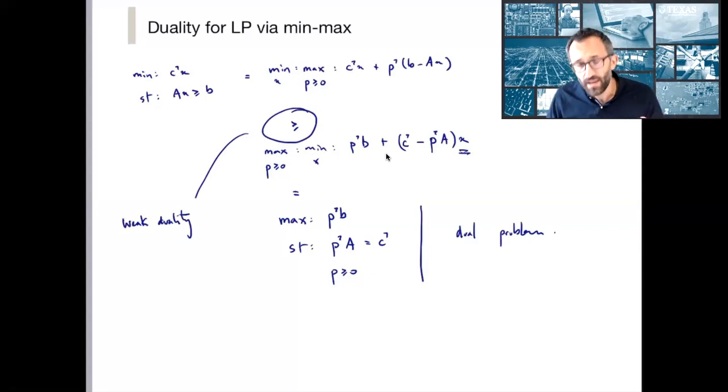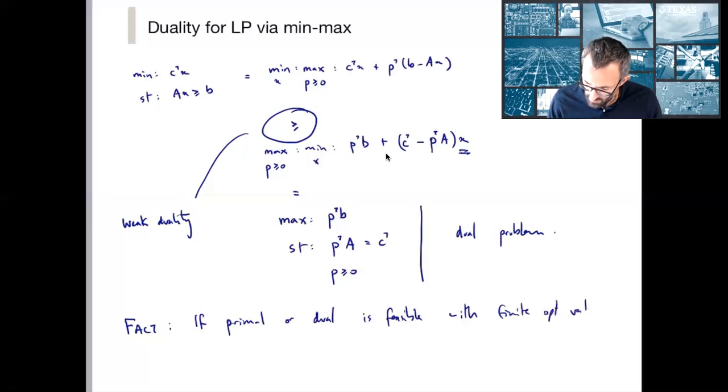And a fact which we'll see a little bit later is that if the primal or dual is feasible with a finite optimal value, then both are feasible and both have finite optimal value. And moreover, those optimal values are equal, meaning c^T x* is equal to p*^T b.